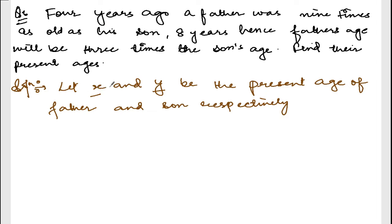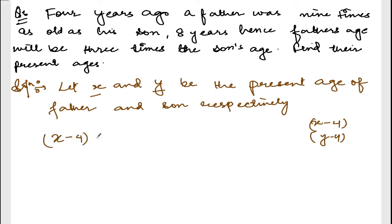4 years ago — if X is your age now, 4 years ago means before 4 years, it will be X minus 4. Same thing with Y: Y will be Y minus 4. So 4 years ago, a father was 9 times as old as his son. Father's age was X minus 4. Given: X minus 4 equals 9 times the son's age, which is Y minus 4, because the question says 4 years ago.